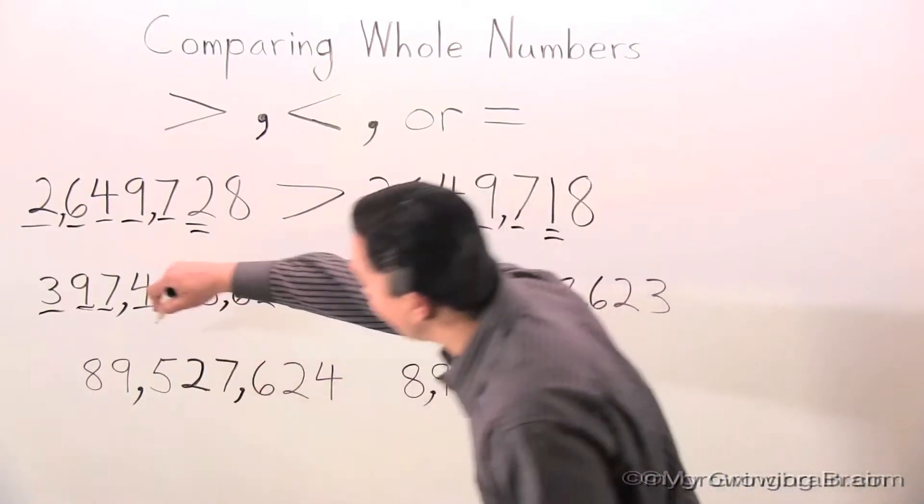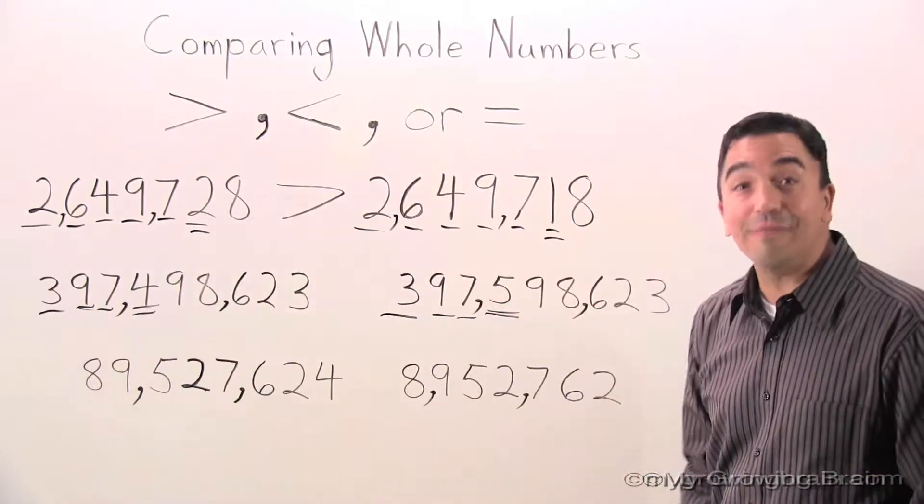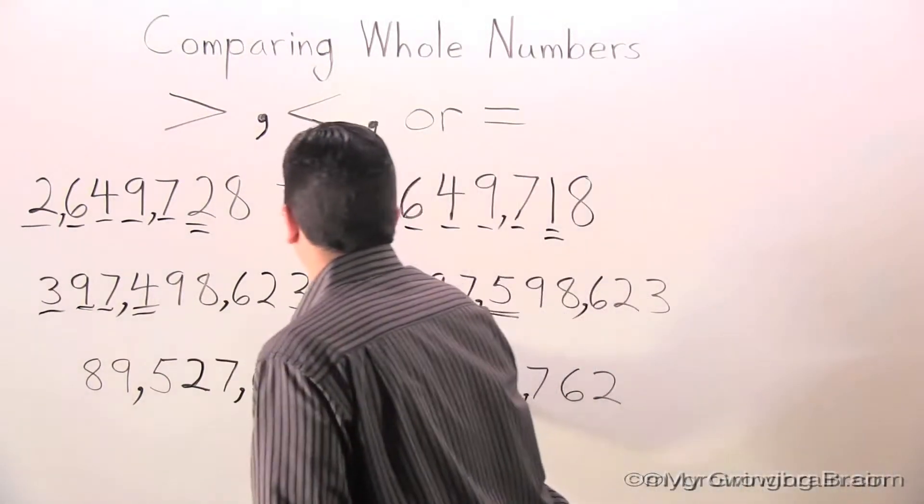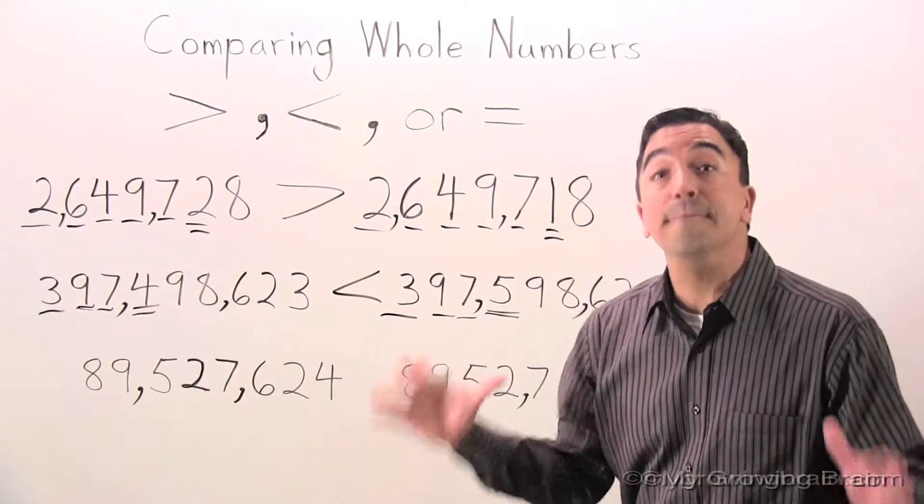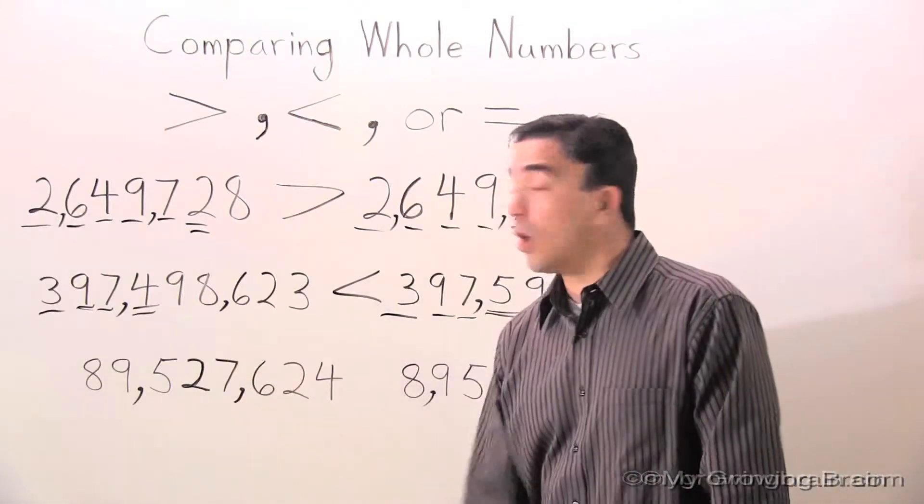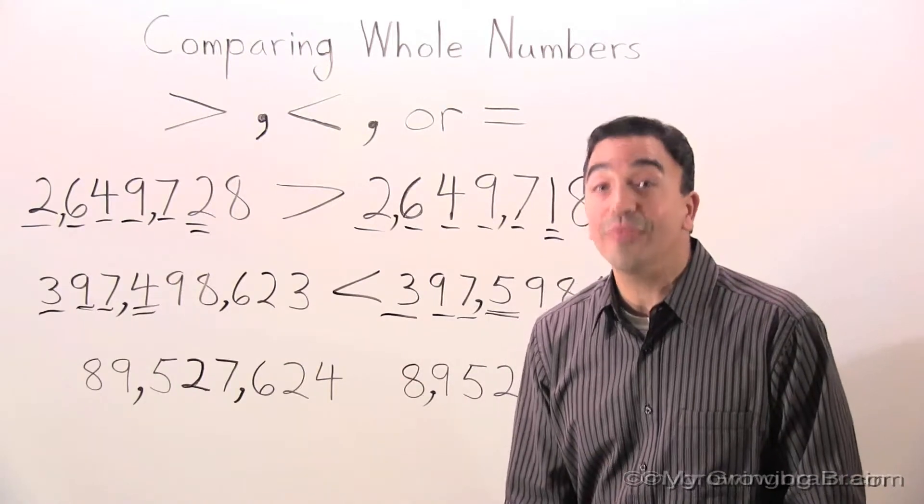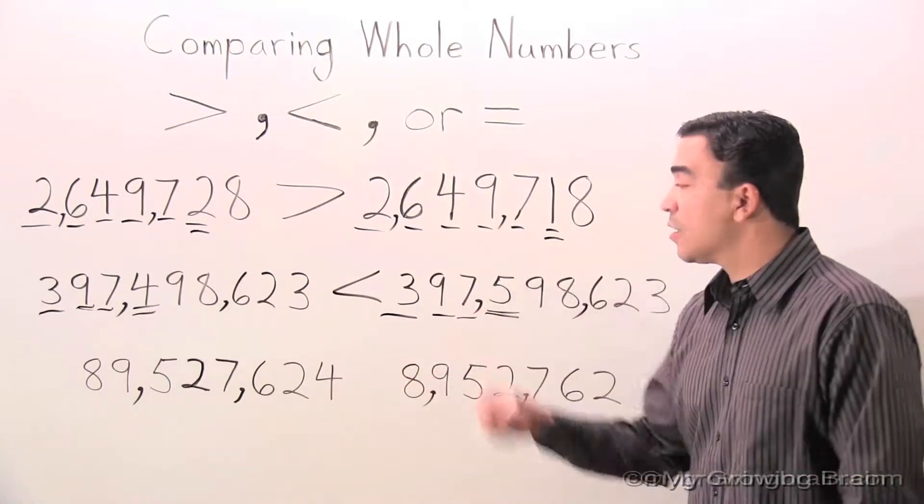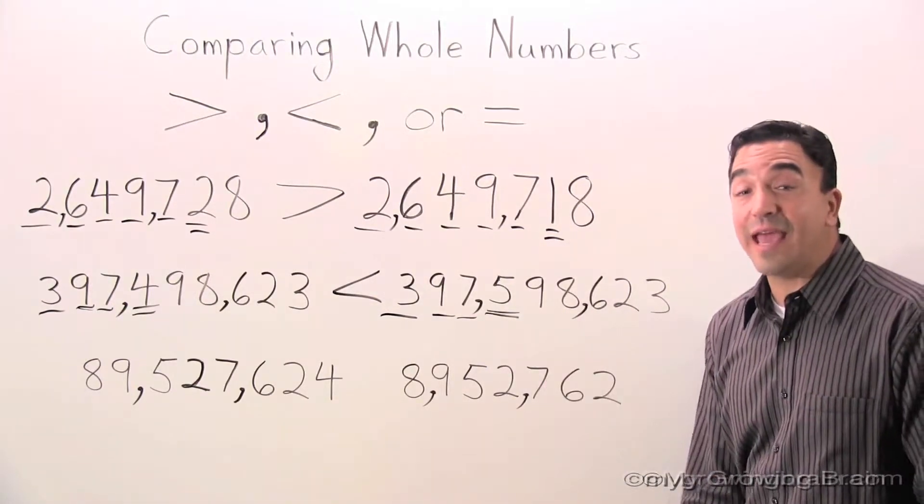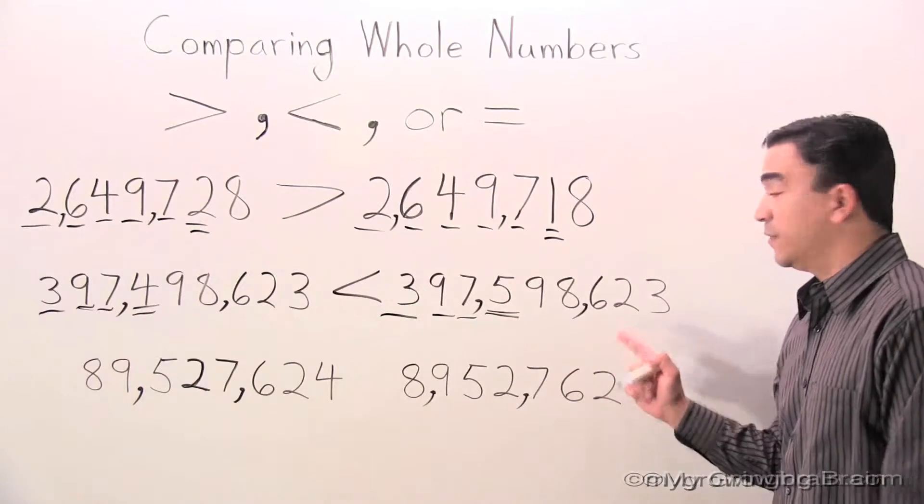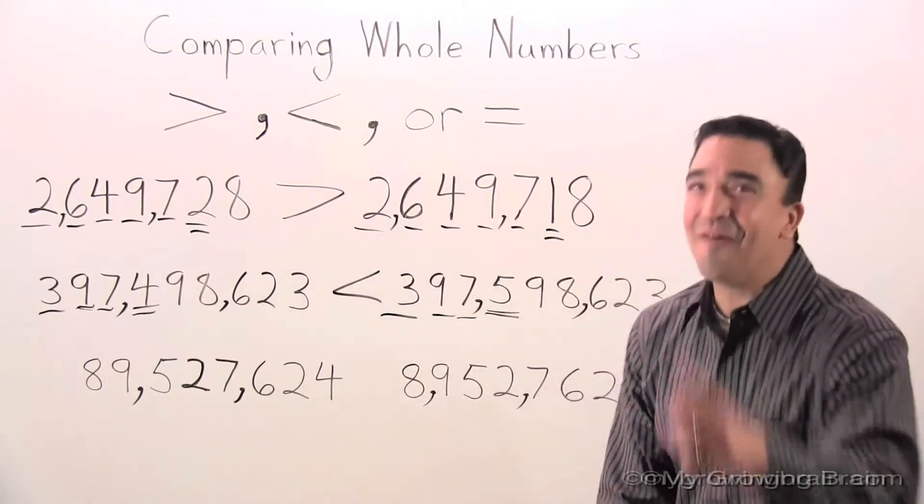There we go. Four is less than five. So we read this. 397,498,623 is less than 397,598,623. One more to go.